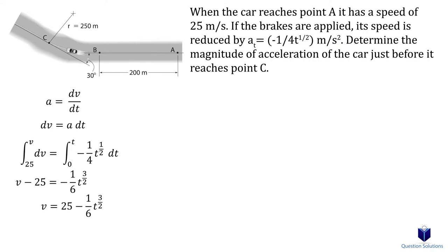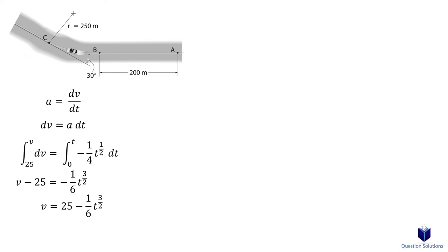Now using this, we can find an equation for position. Velocity is ds over dt. Changing it up a bit gives us ds is equal to v dt. We know the equation for velocity, the initial position is 0 meters, and initial time is 0 seconds. So let's write another integral and solve it to get a position equation.